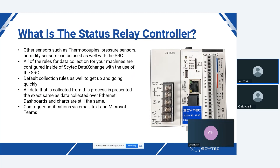There are also default rule collections to get up and going quickly without spending a lot of time on configuration. All the data collected from this process is presented the exact same way as data collected over Ethernet — your manufacturing charts and dashboards are all still the same. This is consistent across all different licensing levels and their provisions, such as the notification feature set, which includes email, text, and Microsoft Teams notifications that you will receive in real time.